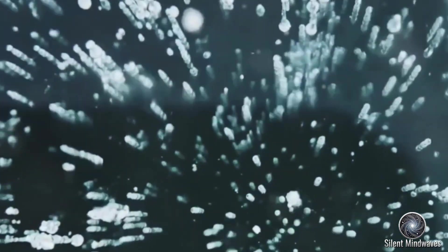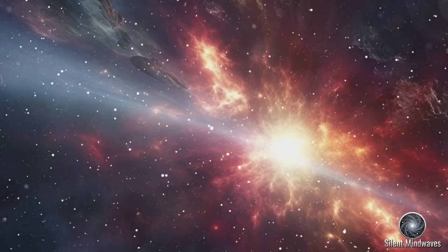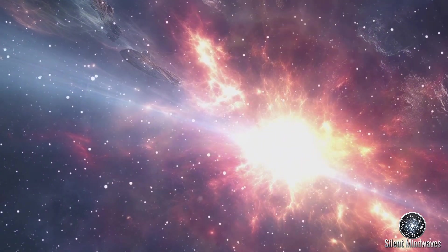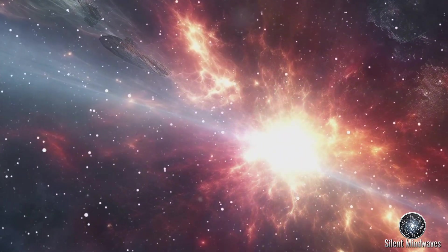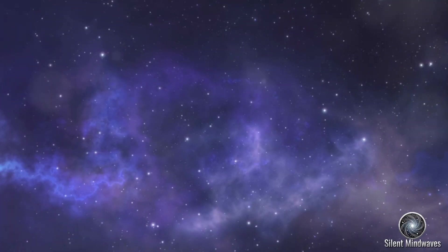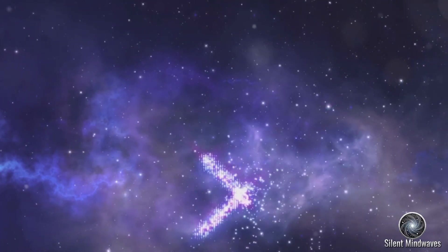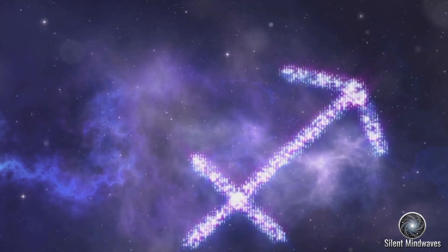The Big Bang, the event that marked the beginning of space and time, is believed to have started from a state of incredibly low entropy, an incredibly ordered state. This initial order allowed for the complex structures we see in the universe today to eventually form. As the universe expanded and cooled, energy became more evenly distributed, leading to the formation of stars, galaxies, and planets.